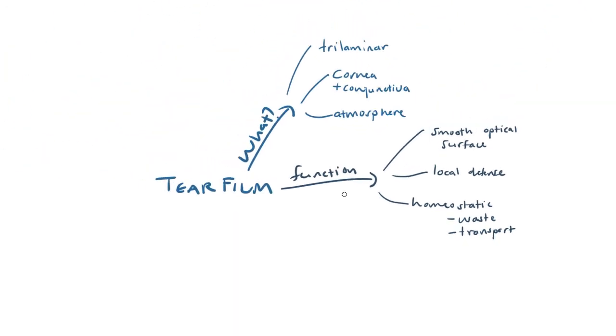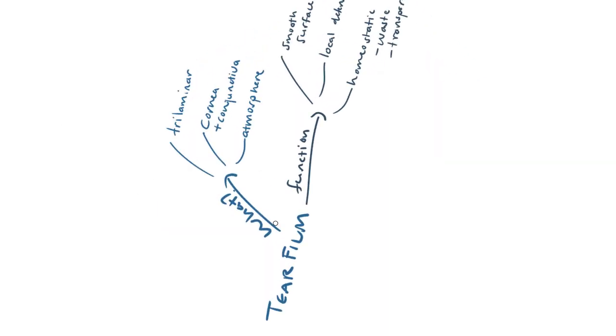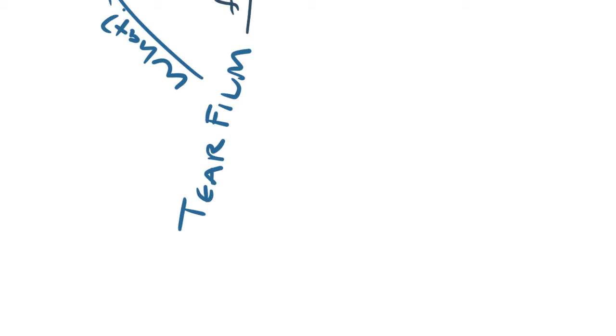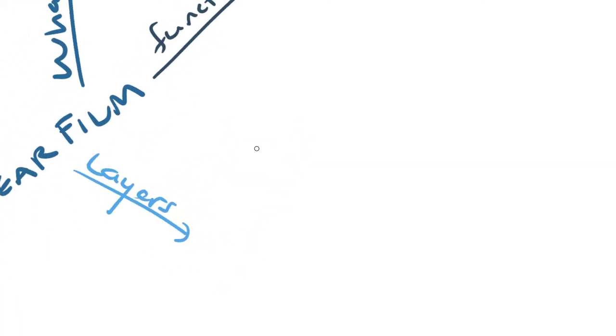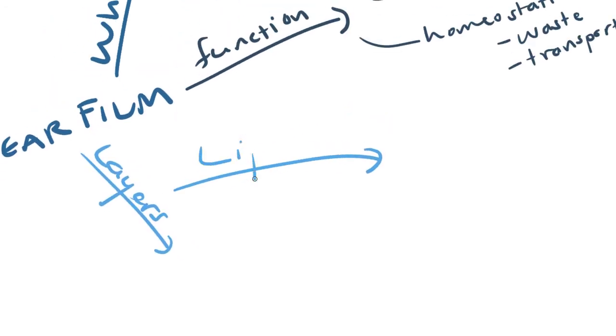Okay, so we've spoken about what it is and what the major functions of the tear film are. Let's move on to the different layers. Remember we mentioned earlier that it was a trilaminar structure. So the first layer and the most exterior layer is called the lipid layer.